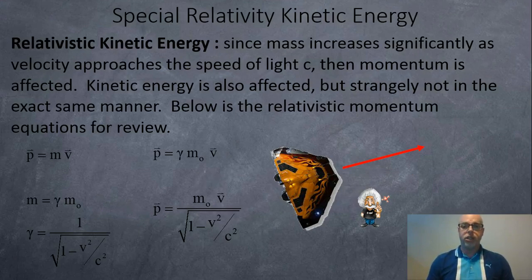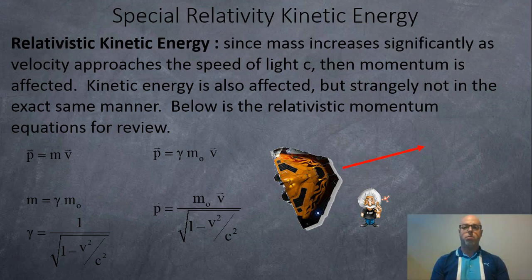Relativistic kinetic energy is very similar to relativistic momentum. It is affected by the mass increase, but it's actually not as straightforward. Here you can see how momentum is affected. Your momentum is mass times velocity, and in relativity you just add the gamma factor where m is your rest mass and gamma takes into consideration the mass increase.